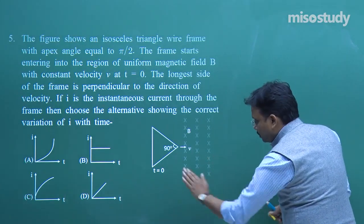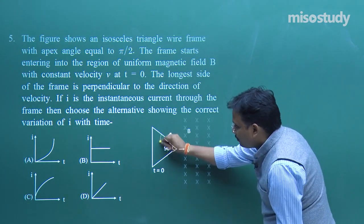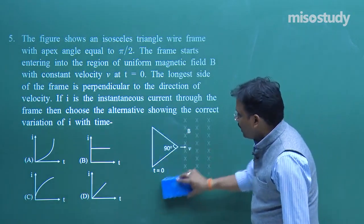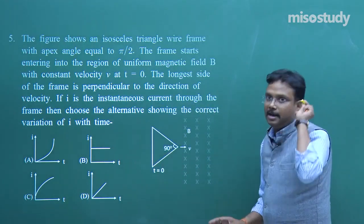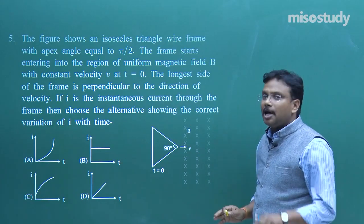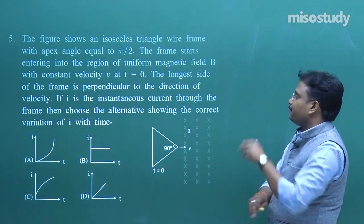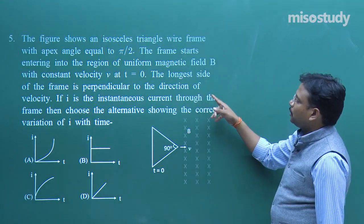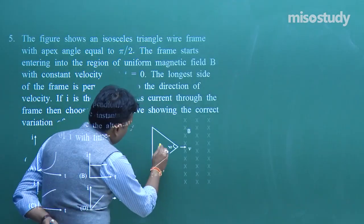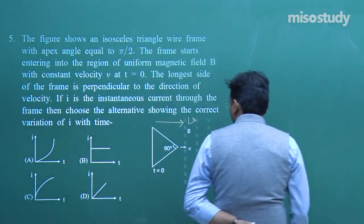As more of the triangle enters the field: when this much portion is inside, some induced EMF; when more is inside, a larger induced EMF. So the problem is based on change in effective area. The frame enters with constant velocity V, and at t = 0 we start observing. The longest side is perpendicular to the direction of velocity.